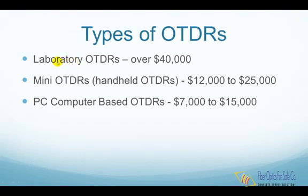There are three types of OTDRs on the market. Laboratory OTDRs are typically used in test labs; they have extremely long range with many options. Mini OTDRs are portable and designed for field testing; they have built-in screens and provide data storage as traces are collected in the field. PC-based OTDRs connect with a personal computer and operate with Windows-based software, allowing saving traces to disk and transferring data between computers.